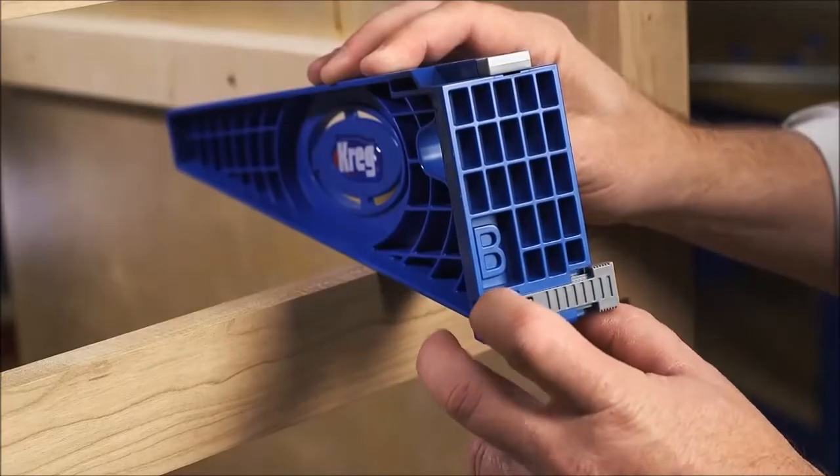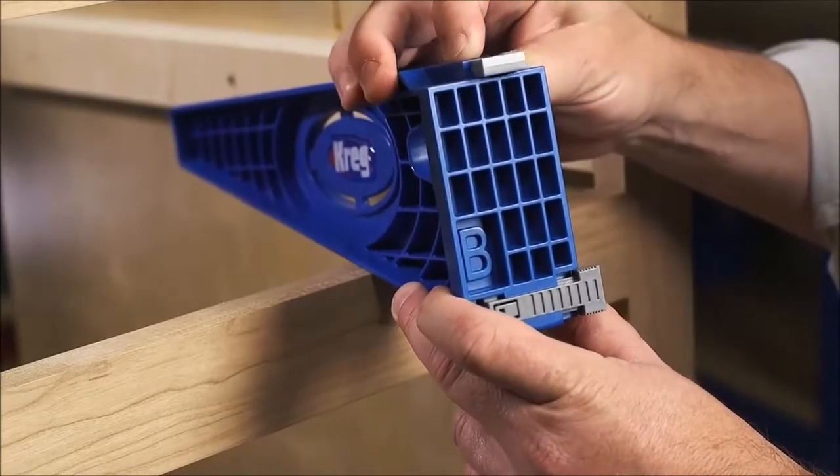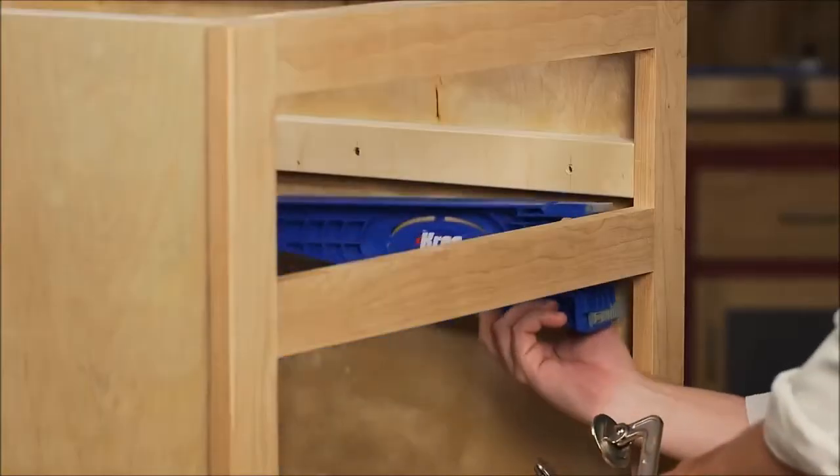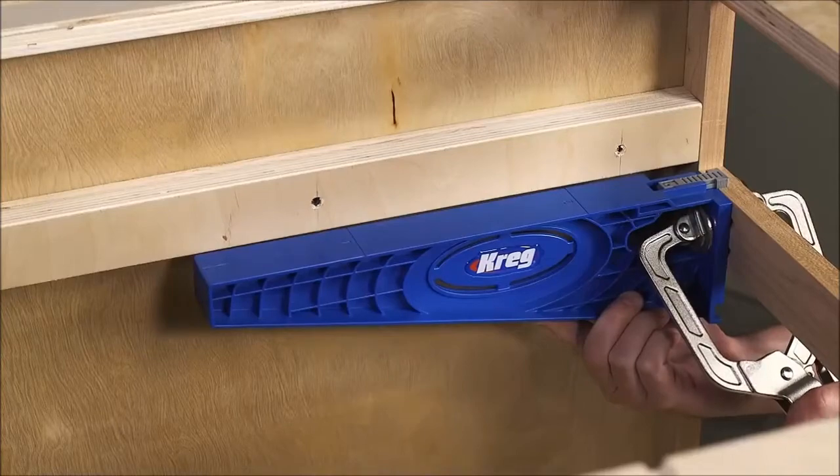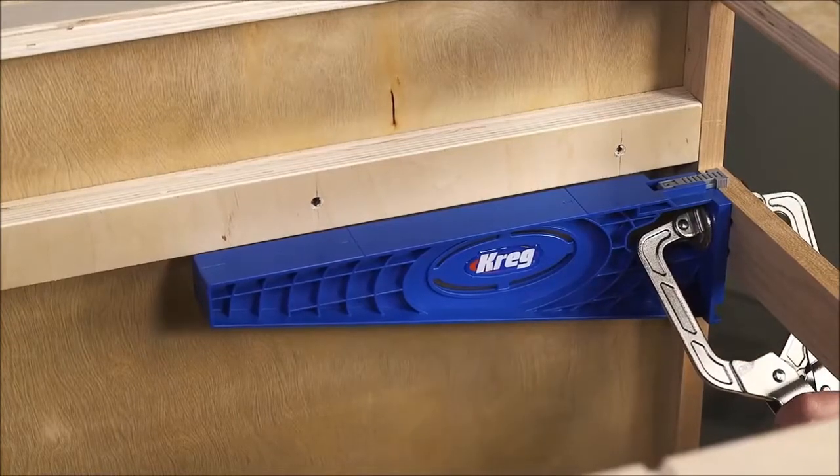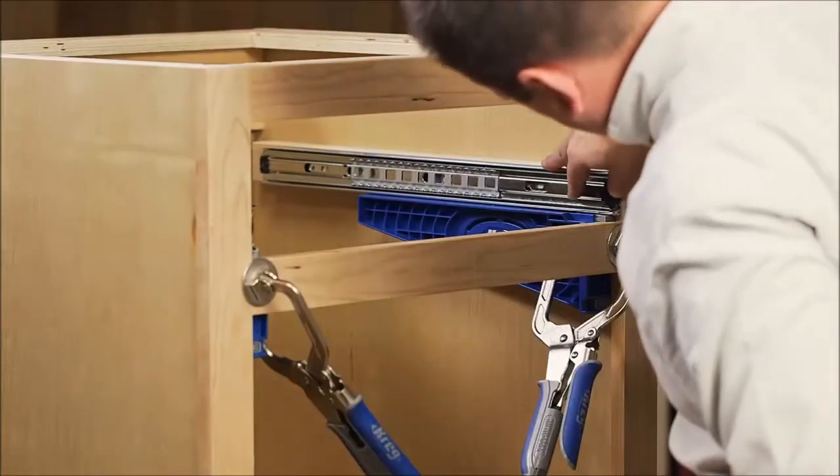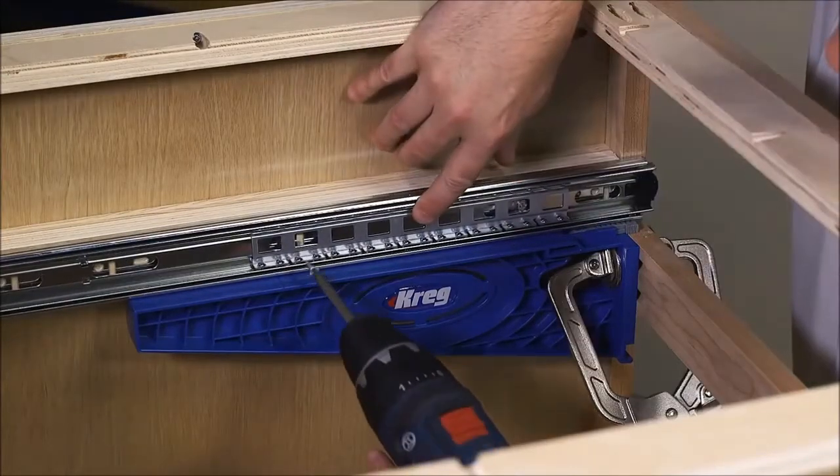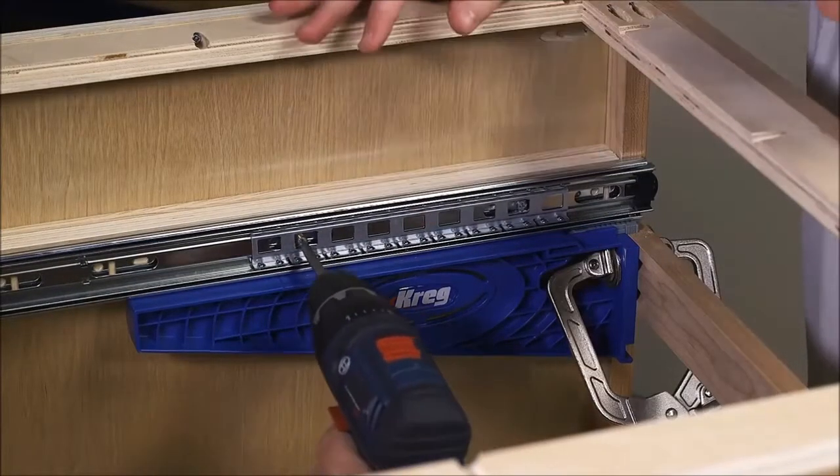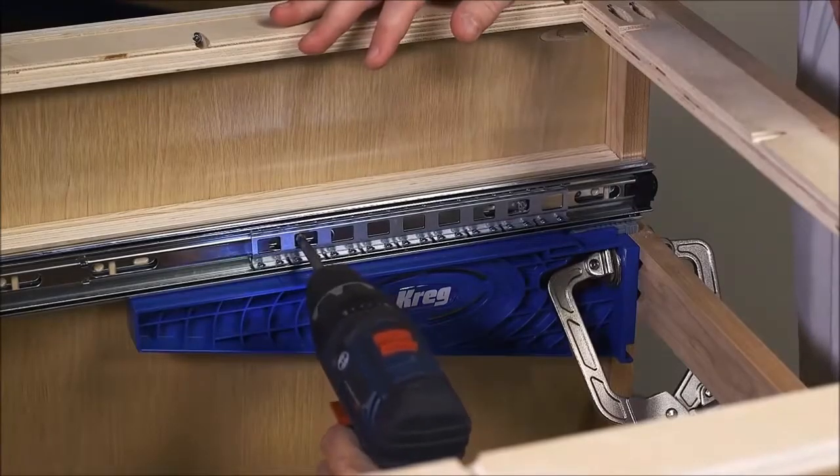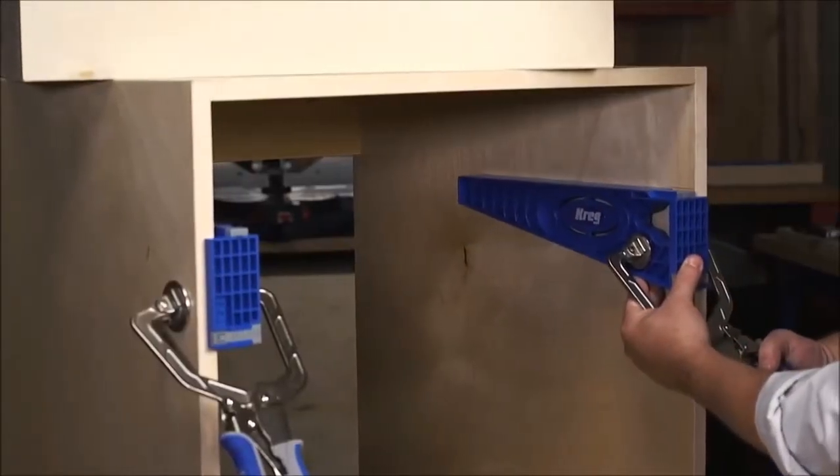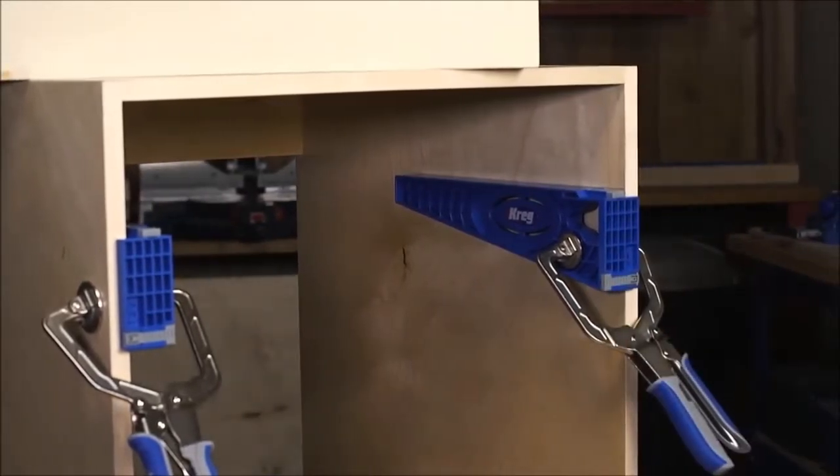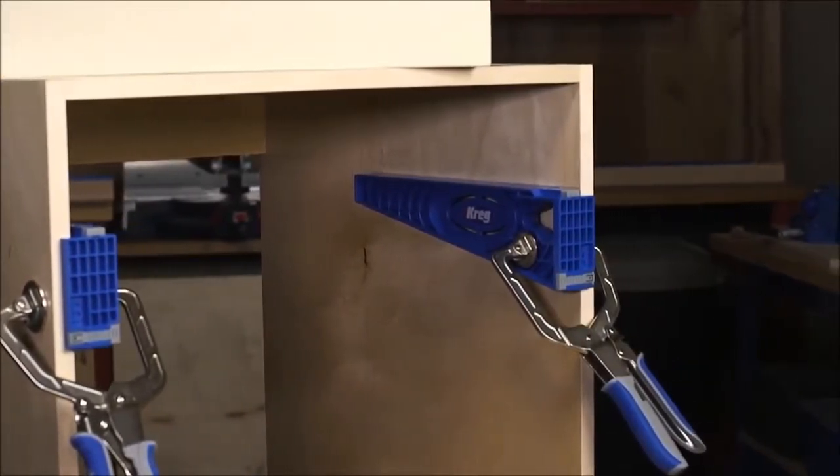Using the drawer slide jig couldn't be simpler. Built-in tabs register the jig's brackets in place precisely. Just align the tabs with the face frame and clamp the bracket in place. This positions the bracket exactly where you need it, ensuring foolproof level positioning without measuring. On frameless cabinets, the brackets register against the front edge and clamp in place at the layout line.